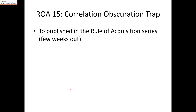Rule of Acquisition 15 — the Correlation Obscuration Trap — will be published in the Rules of Acquisition video series, where I'll be able to give a lot more detail and show all the interesting things it has triggered. When this came about it was amazing how the connection opened up everything that had been blocking me. If you want a simple sense of the trap: 'everything that glitters is not gold.' Just because something correlates to gold doesn't mean it's gold — and just because joules correlate to energy doesn't mean it's energy.